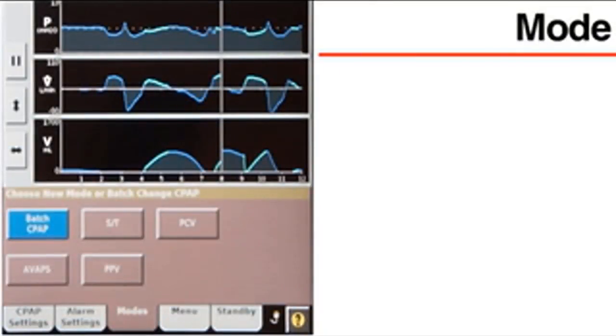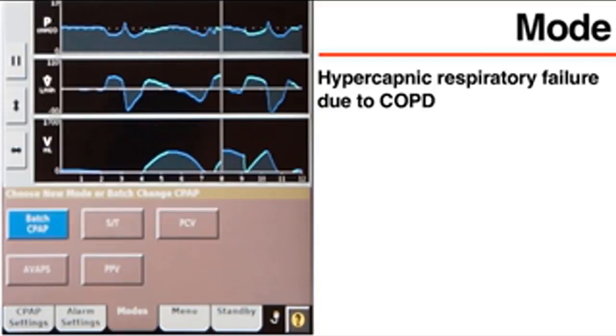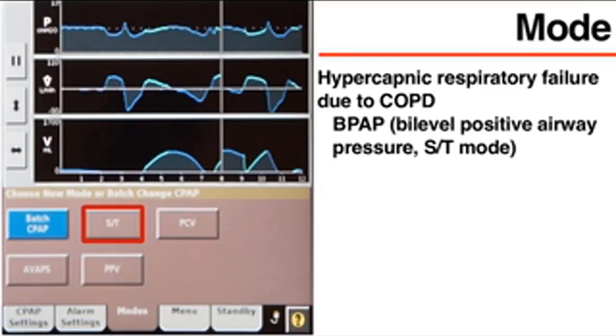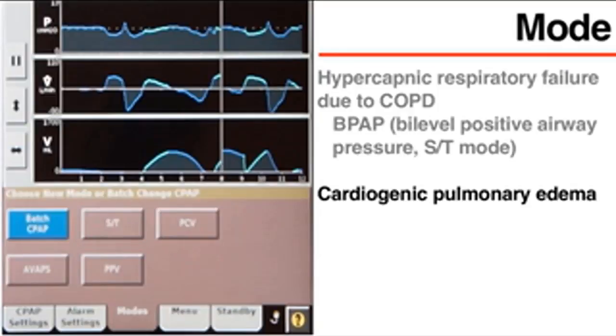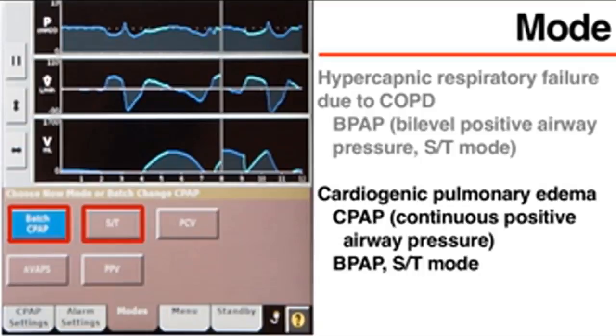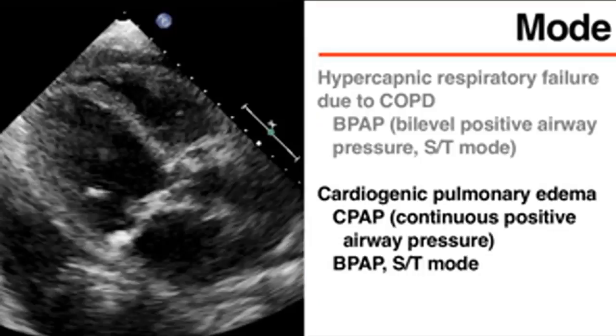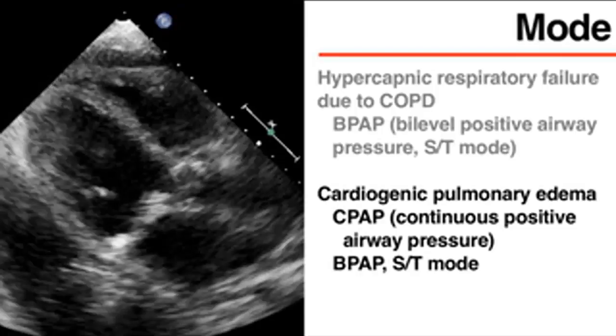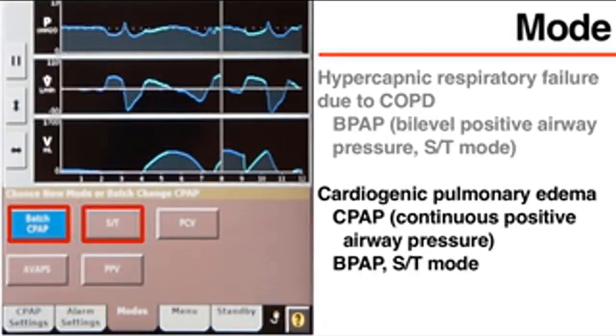To prepare the ventilator, first select the mode. Patients with hypercapnic respiratory failure due to COPD should receive BPAP. Patients with cardiogenic pulmonary edema without shock or ischemia may receive either CPAP or BPAP since both provide positive end-expiratory pressure, which is beneficial in ventricular dysfunction. If the patient has hypercapnia, however, BPAP is more appropriate.